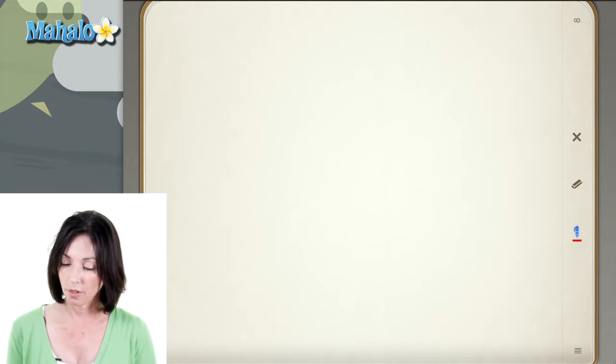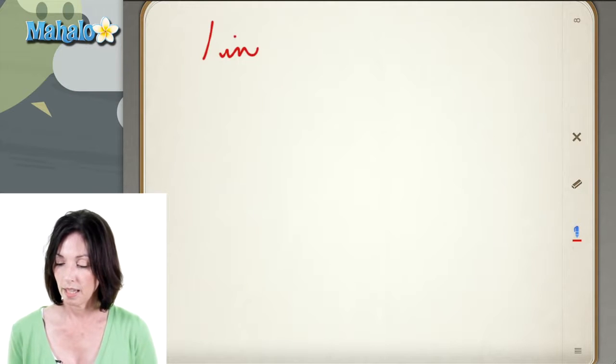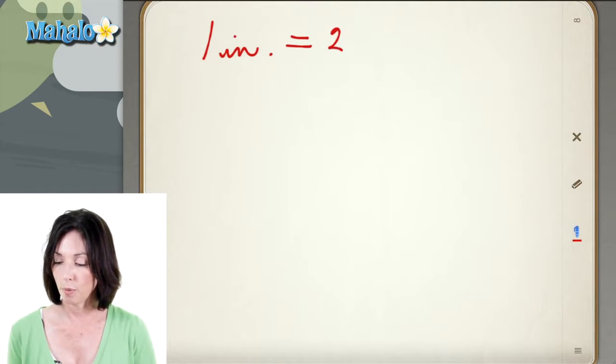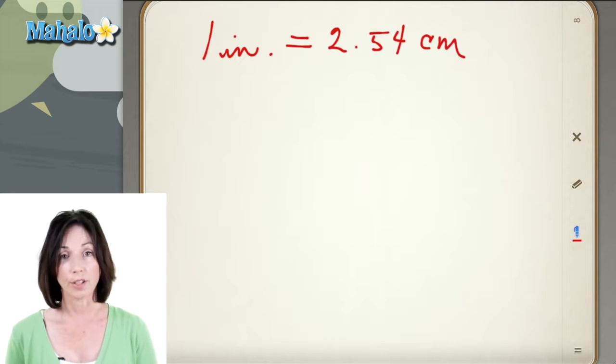So what's important to know about this is the conversion factor—how many inches there are in how many centimeters. So there is one inch for every 2.54 centimeters. That's our conversion factor.